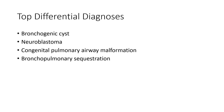The top differential diagnoses for round pneumonia include bronchogenic cyst, neuroblastoma, congenital pulmonary airway malformation, and bronchopulmonary sequestration.